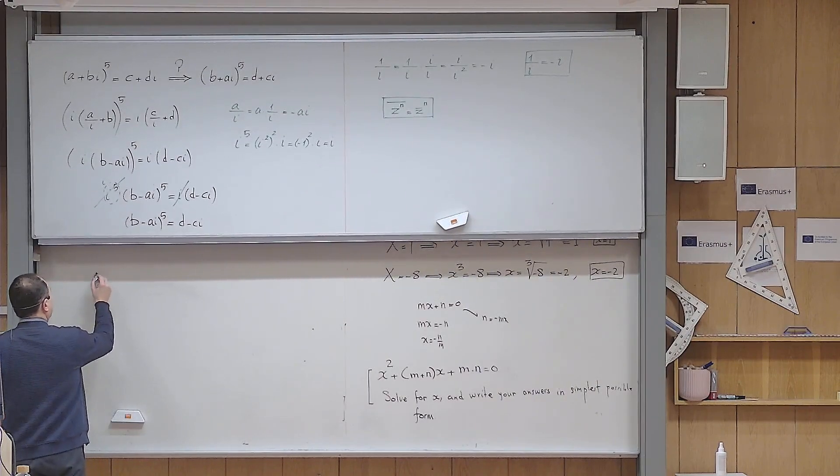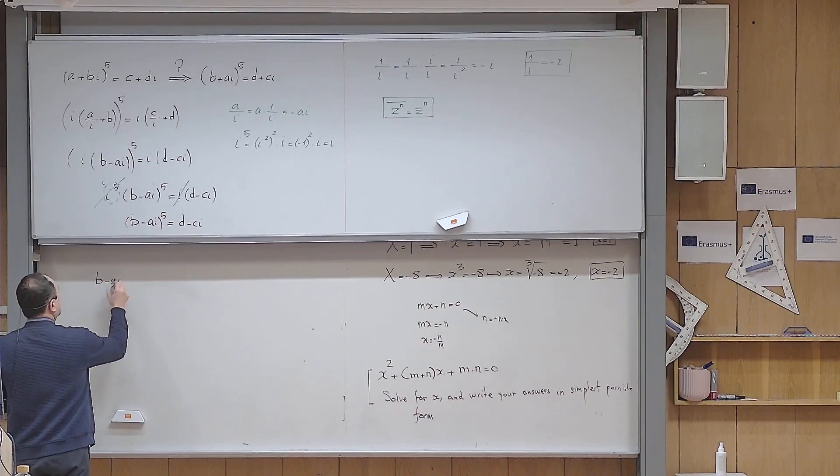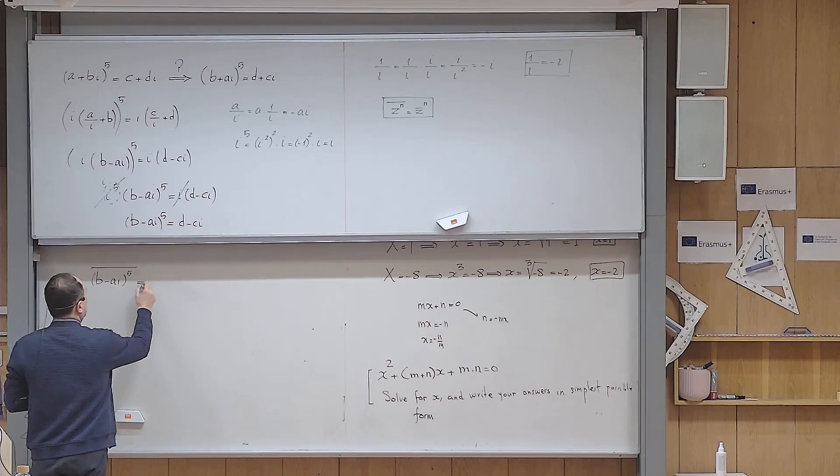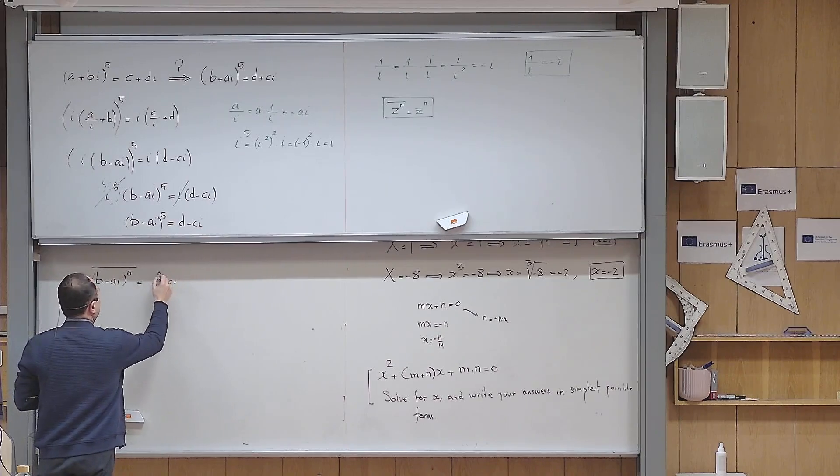So it becomes (b minus ai) to the power of five, conjugate, and then it becomes (d minus ci) conjugate.